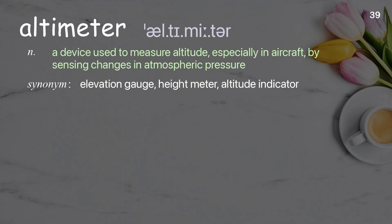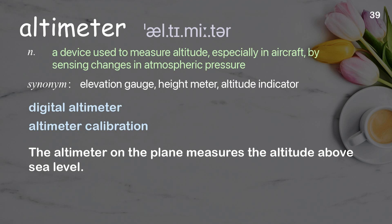Altimeter: a device used to measure altitude, especially in aircraft, by sensing changes in atmospheric pressure. Examples: digital altimeter, altimeter calibration. The altimeter on the plane measures the altitude above sea level.